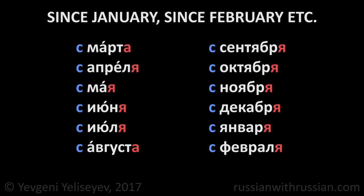The names of autumn and winter months are stressed on the ending. С сентября – since September, с октября – since October, с ноября, с декабря, с января, с февраля.